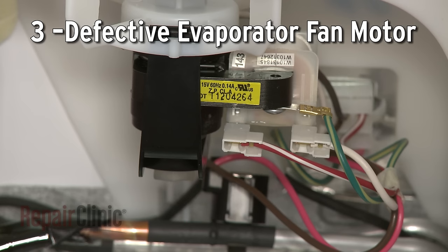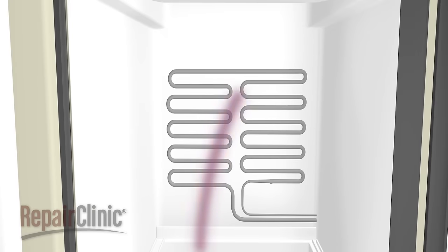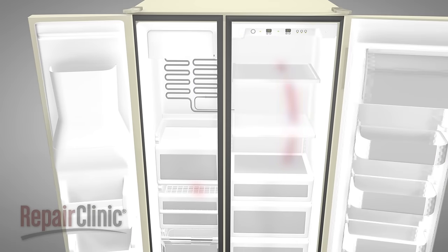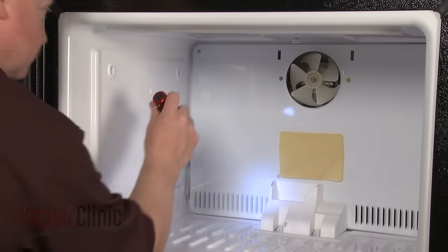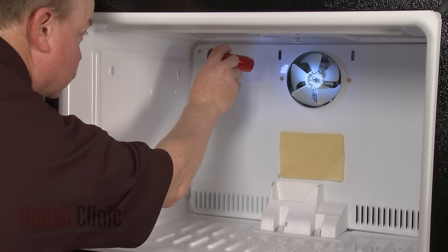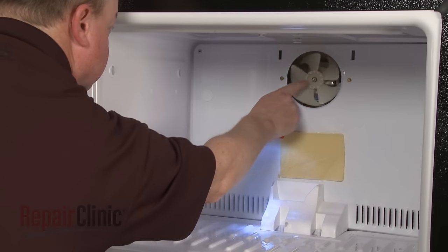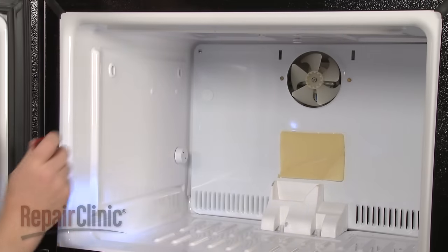The evaporator fan motor draws air over the coils to cool it and circulates the air through the freezer and refrigerator compartments. If the evaporator fan motor is defective, the cold air will not be circulated into the refrigerator. If the motor is unusually noisy when the refrigerator is running or the fan blade does not turn freely, you should replace the motor with a new one.